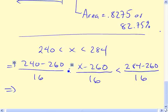If we simplify these things, this is minus 20 divided by 16. So this is minus 1.25, less than, remember now, this is z, standard normal, and this is less than 24 divided by 16, that's 1.5.